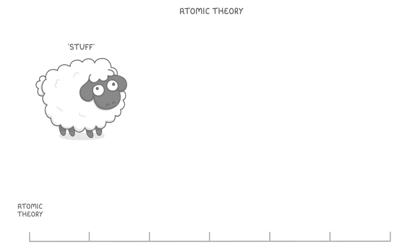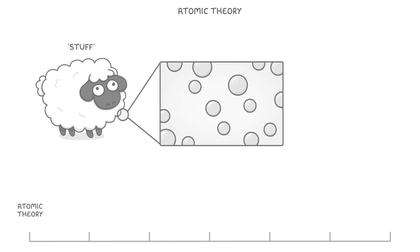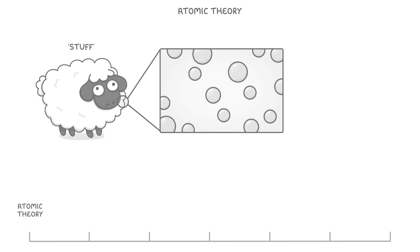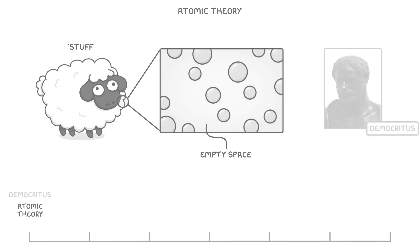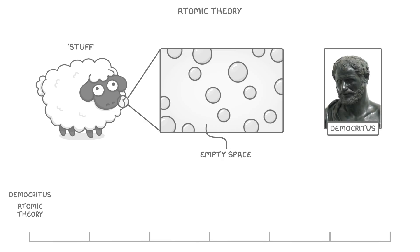The first major theory that tried to explain what stuff is made out of was atomic theory — the idea that everything is made up from tiny little particles that can't be broken down any further, and that they're separated from each other by empty space. This was originally proposed by a man from ancient Greece called Democritus, who was alive around 500 BC.